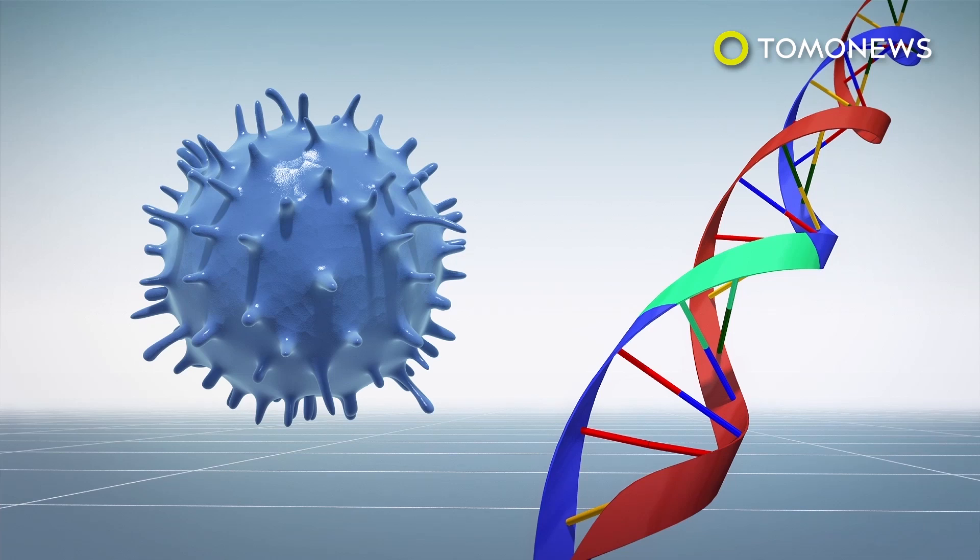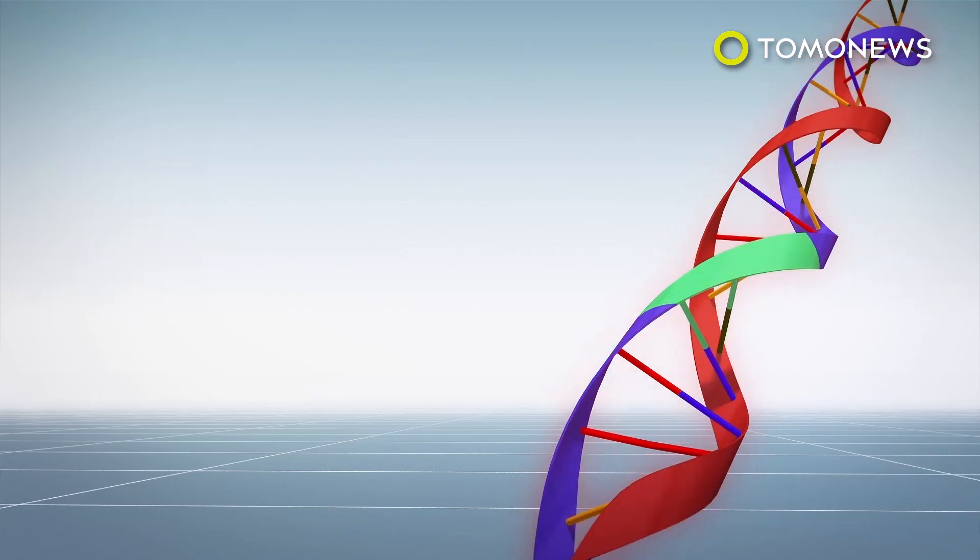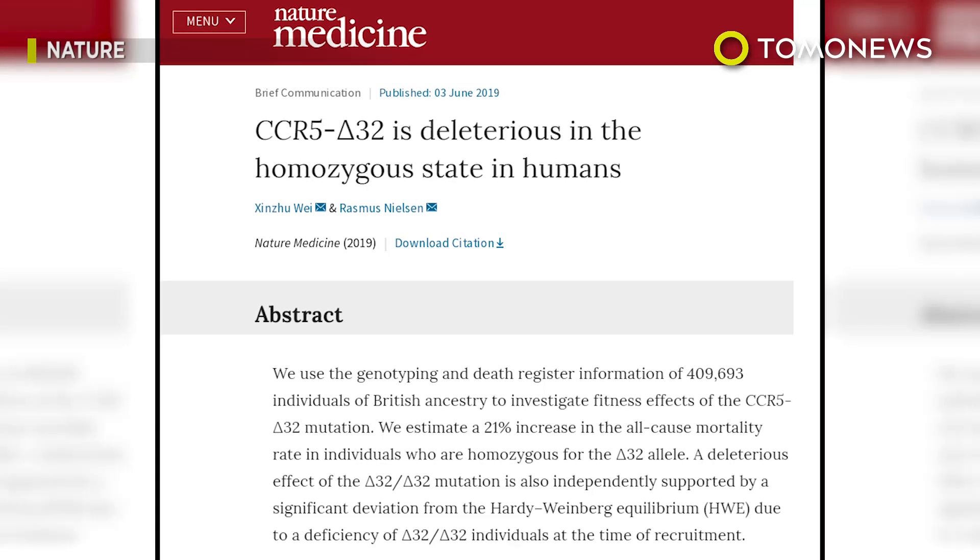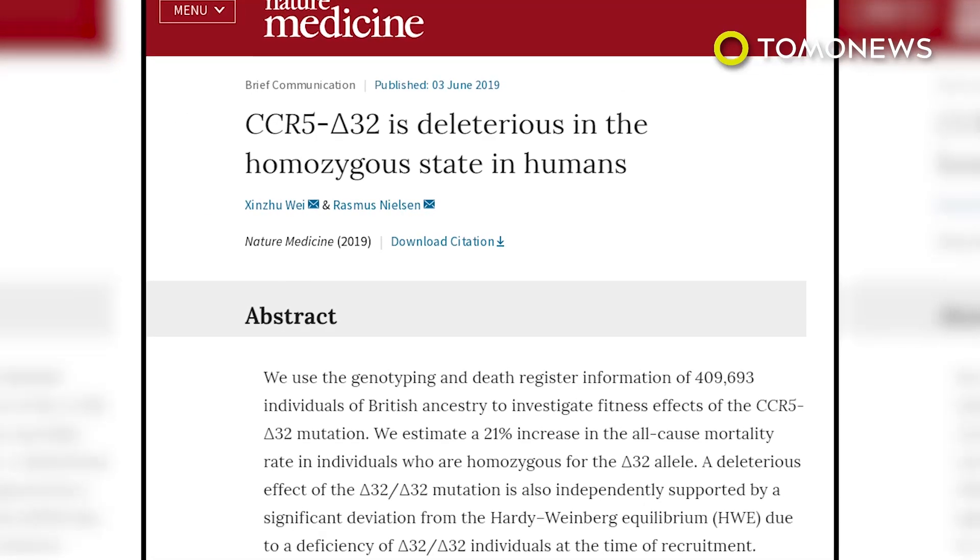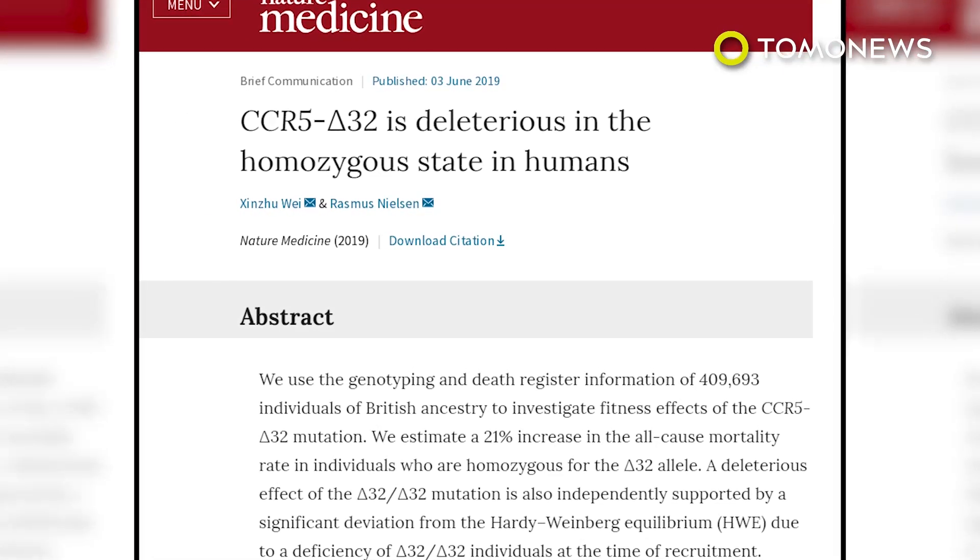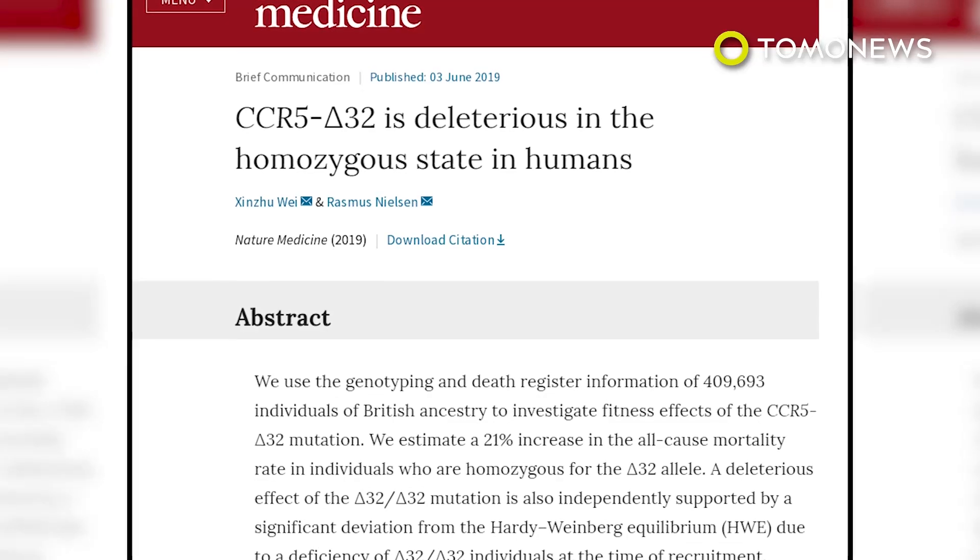According to the study published in Nature Medicine, scientists analyzed the DNA of 400,000 volunteers, some of which had mutated CCR5 genes. Results showed that individuals with non-working CCR5 were 21% less likely to live to age 76.